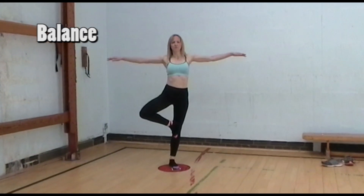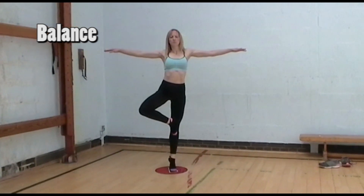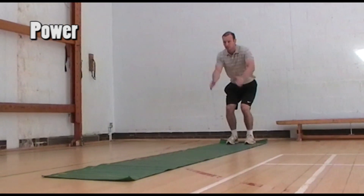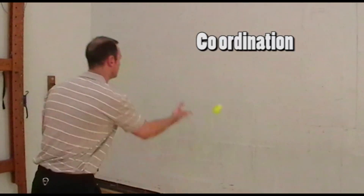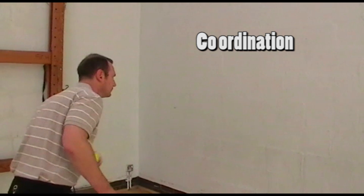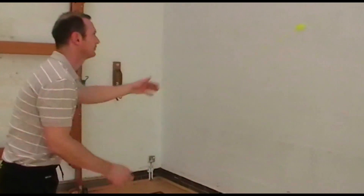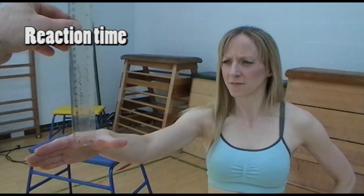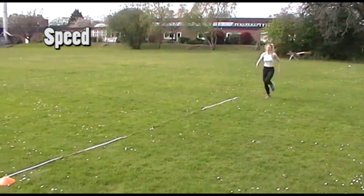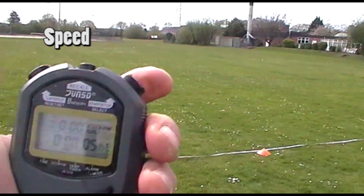Balance is the ability to retain the centre of mass above the base of support, measured using the standing stork test. Power is the ability to use strength at speed, measured using the standing long jump. Coordination is the ability to use two or more body parts together, measured using the tennis ball catch test. Agility is the ability to change the body's position quickly and under control, tested by the Illinois Agility Run. Reaction time is the time between the presentation of the stimulus and the onset of a movement, measured by the ruler drop test. Speed is how quickly an individual can move or cover a distance, measured by the 30 metre sprint.